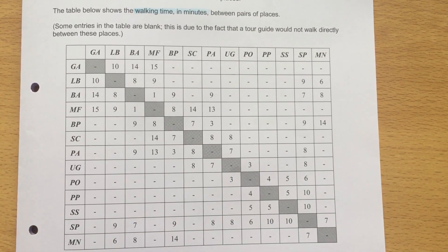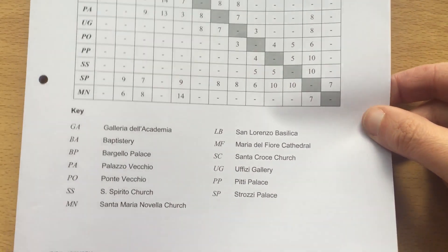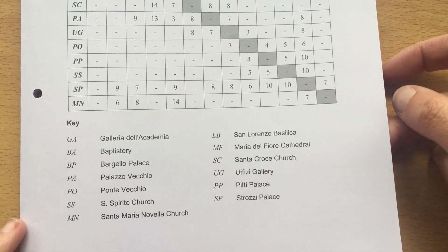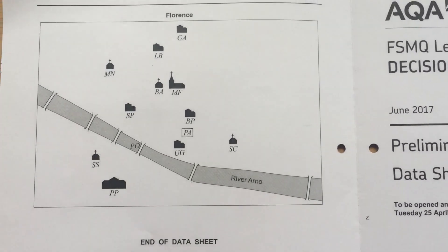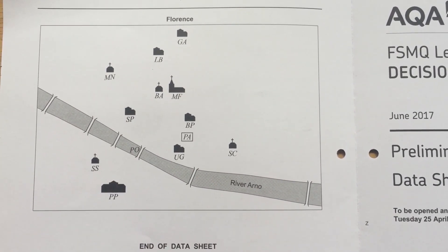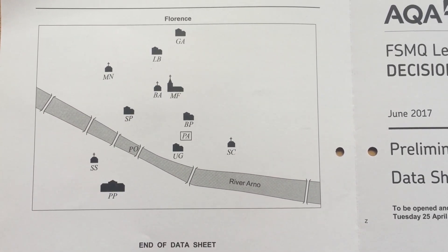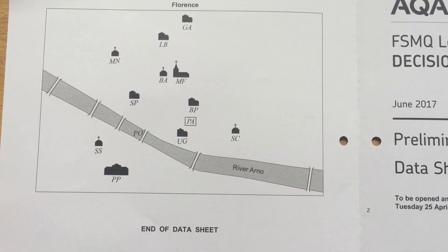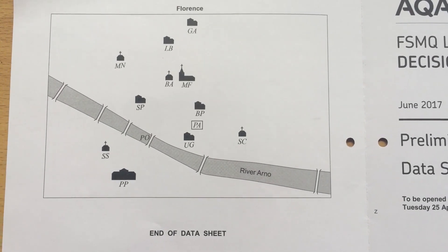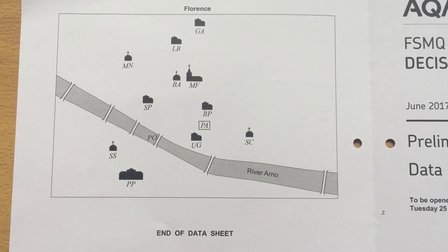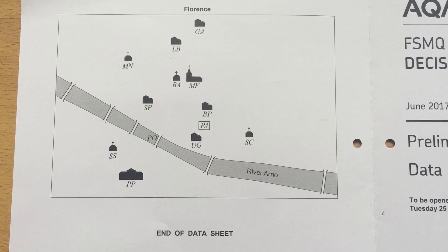We are given a key at the bottom as to what the individual things mean. On the back, we are given an actual map of Florence. This is what will be turned into the network diagram in the exam. Not all of the pathways listed in the previous table will be used; however, some will be added.